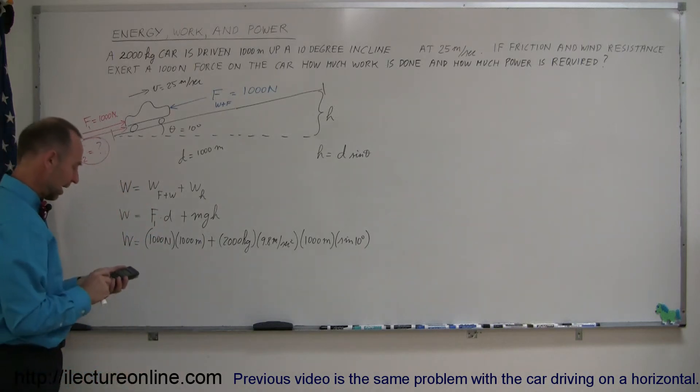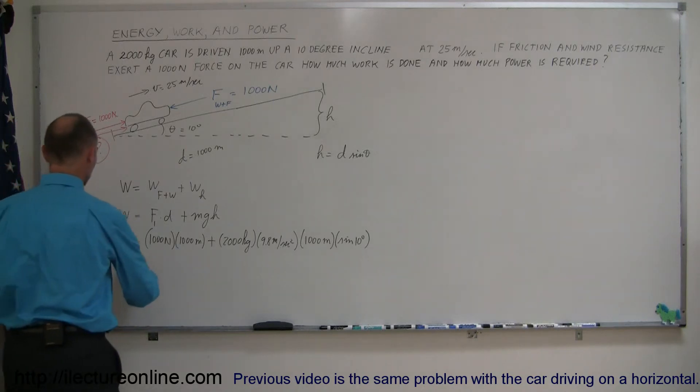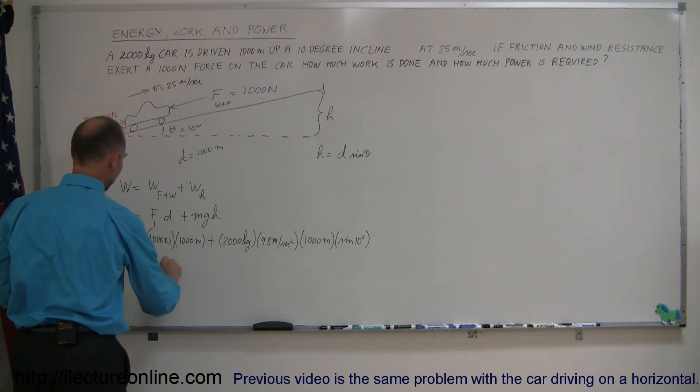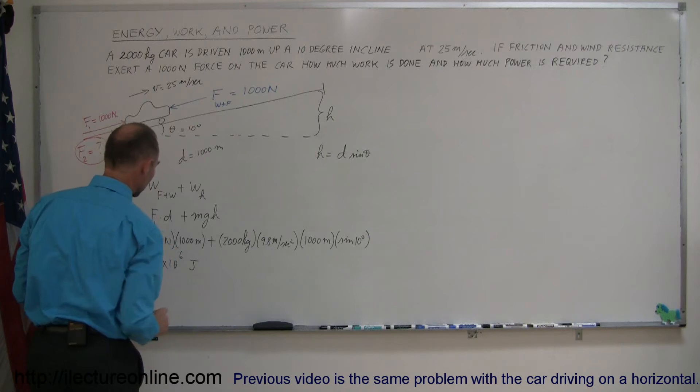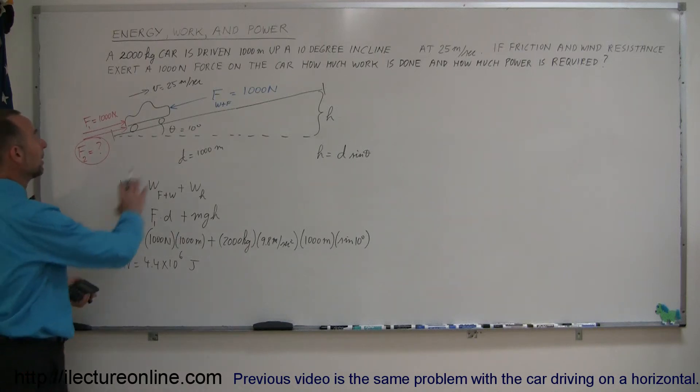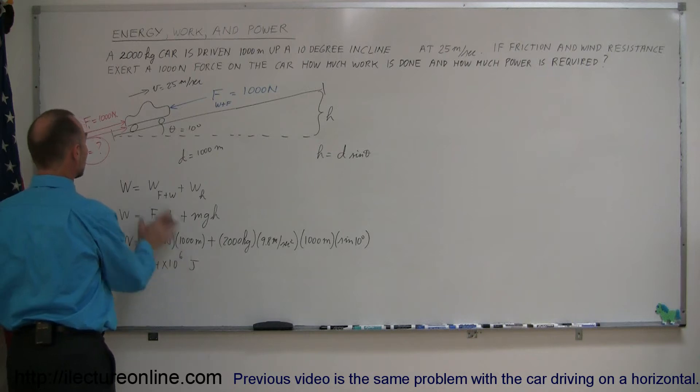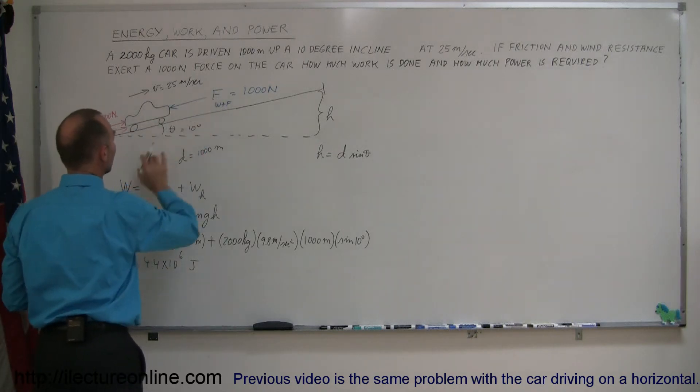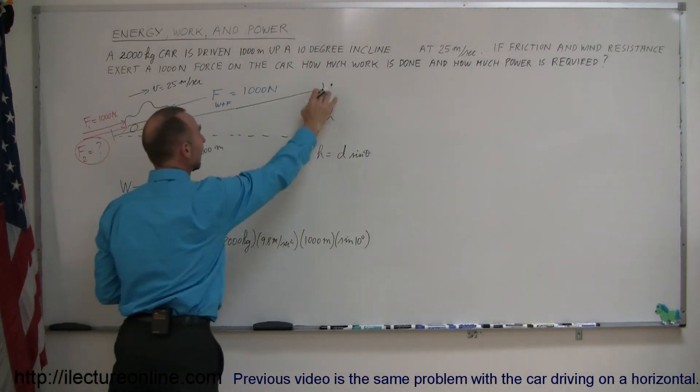So, we have to add to that. That is 3.4 million plus 1 million. So, the work done is equal to 4.4 times 10 to the sixth, and work would be in terms of joules. So 4.4 times 10 to the sixth, or 4.4 million joules of work required to make it up the hill. That comes from needing to overcome the friction force and also from gaining the height.